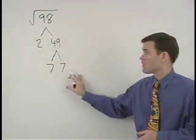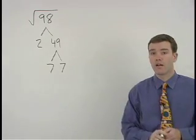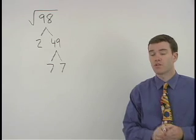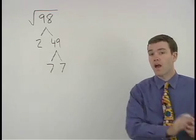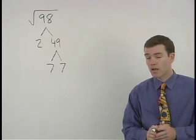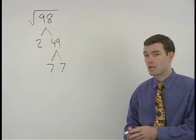What we're looking for in our factor tree are pairs of factors that are the same. If a factor pairs up then it will come out of the radical. If a factor does not pair up then it stays inside the radical.